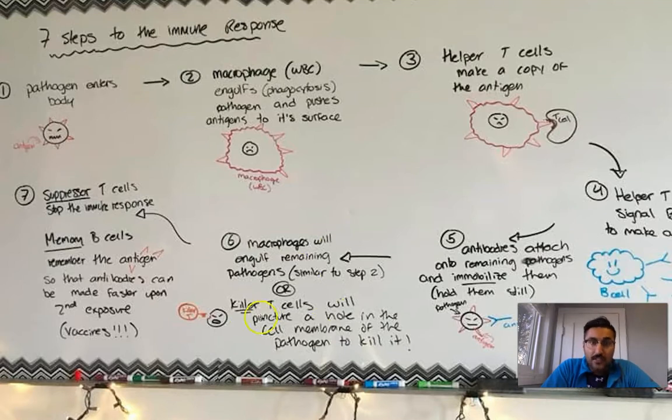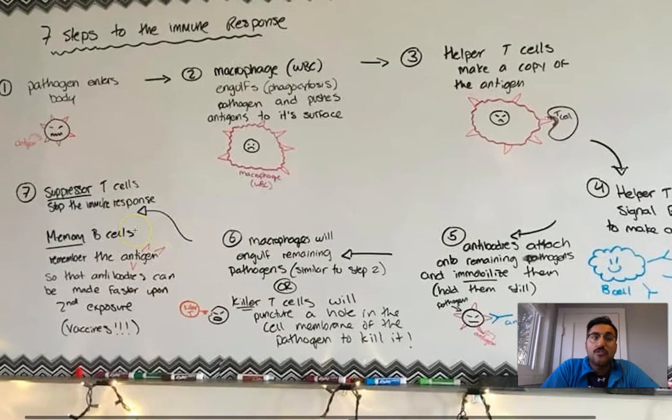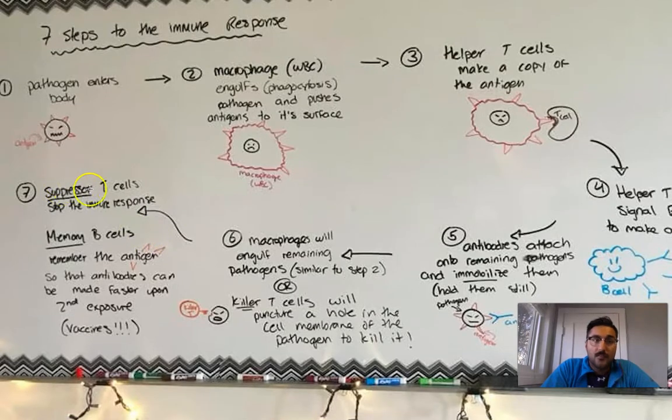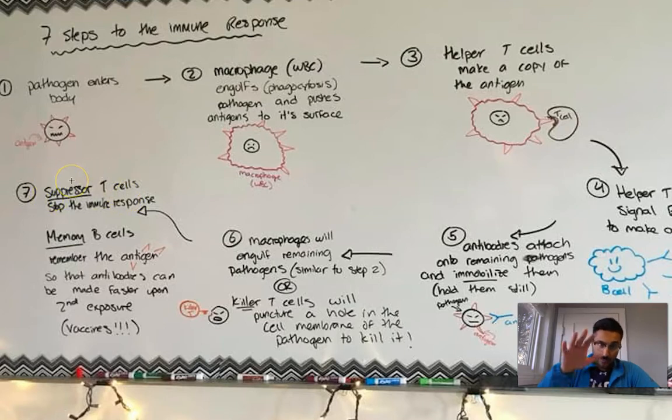you're going to have, eventually, an end to the immune response. All the pathogens will have died. And so when that happens, two things must happen. Suppressor T cells have to stop the immune response. We have to have a different type of T cell, called a suppressor T cell, suppress the immune response. It stops the immune response from happening. This stops your body from fighting pathogens. This is important.